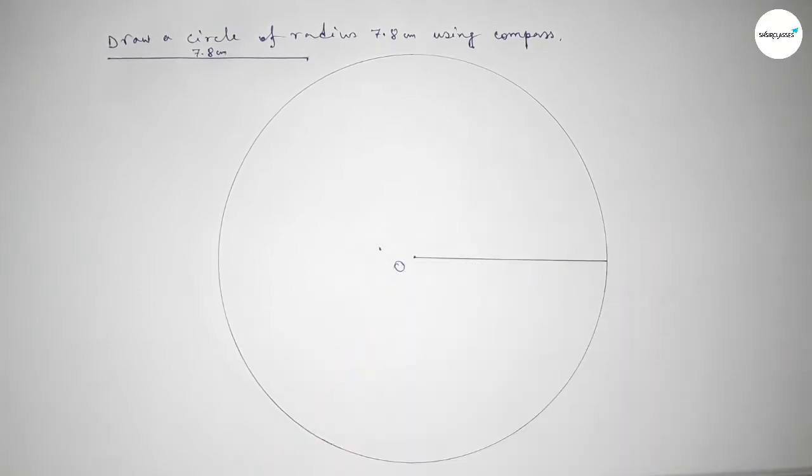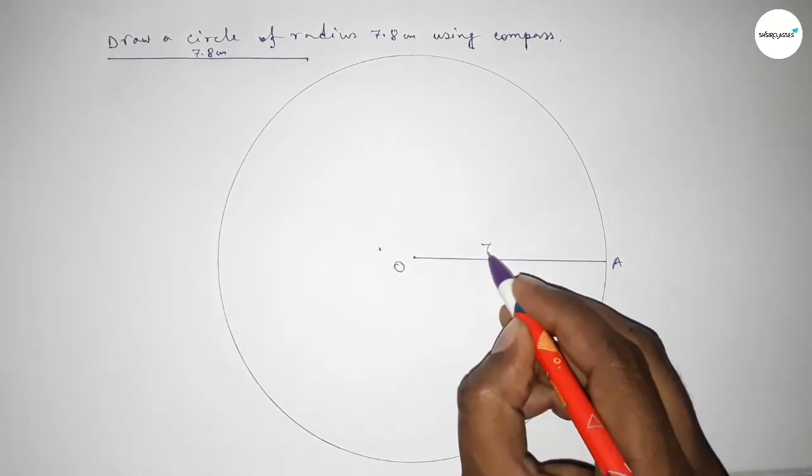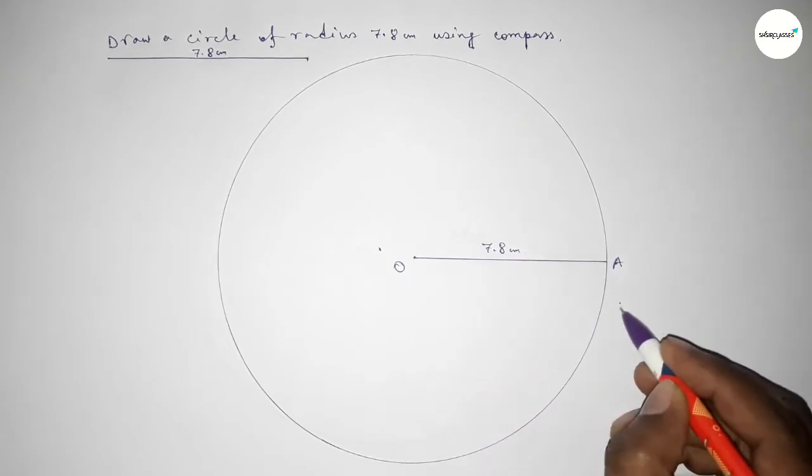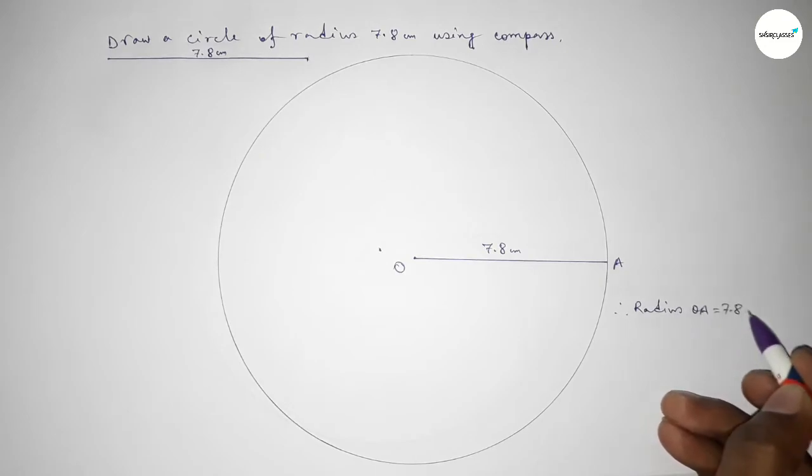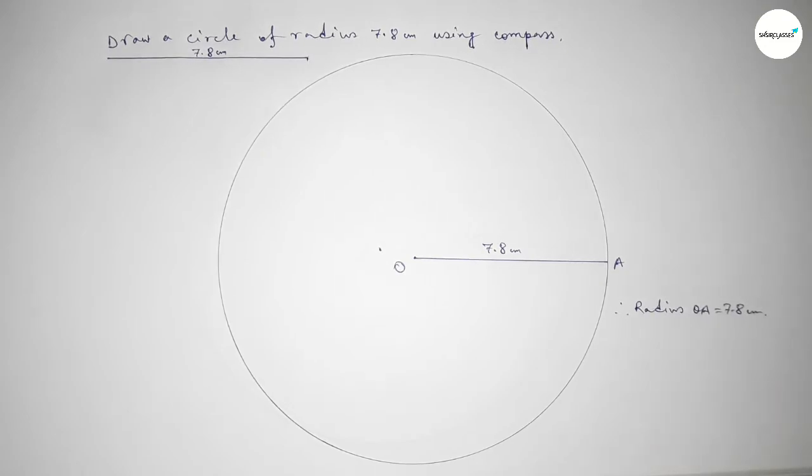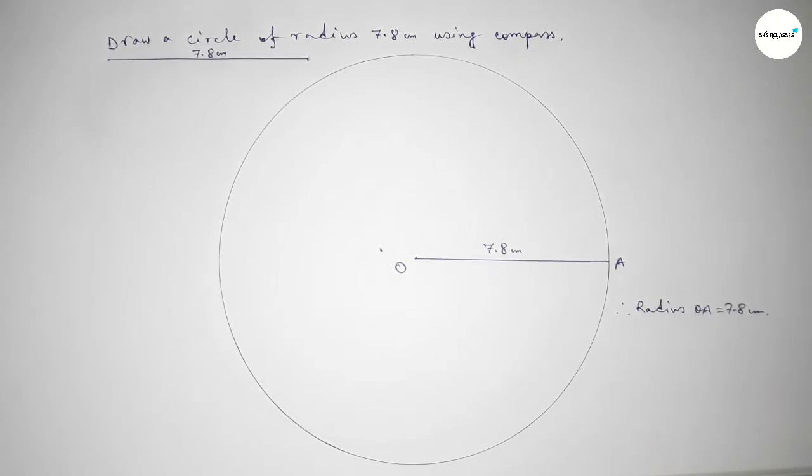And this is the radius of this circle. So taking here point A. So this is 7.8 centimeter. So radius OA equal to 7.8 centimeter. That's all, thanks for watching. If this video is helpful to you then please share it with your friend.